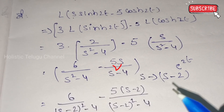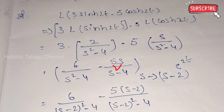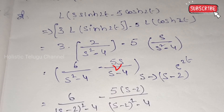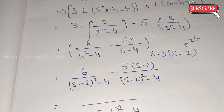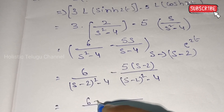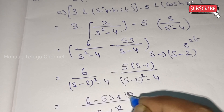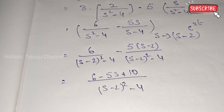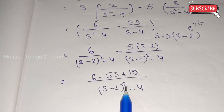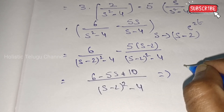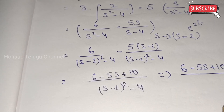Now taking the LCM as (s minus 2)² minus 4, we simplify. We need to expand (s minus 2)² using the (A minus B)² formula. After taking the LCM, the numerator becomes 6 minus 5(s minus 2), which simplifies to 6 minus 5s plus 10.